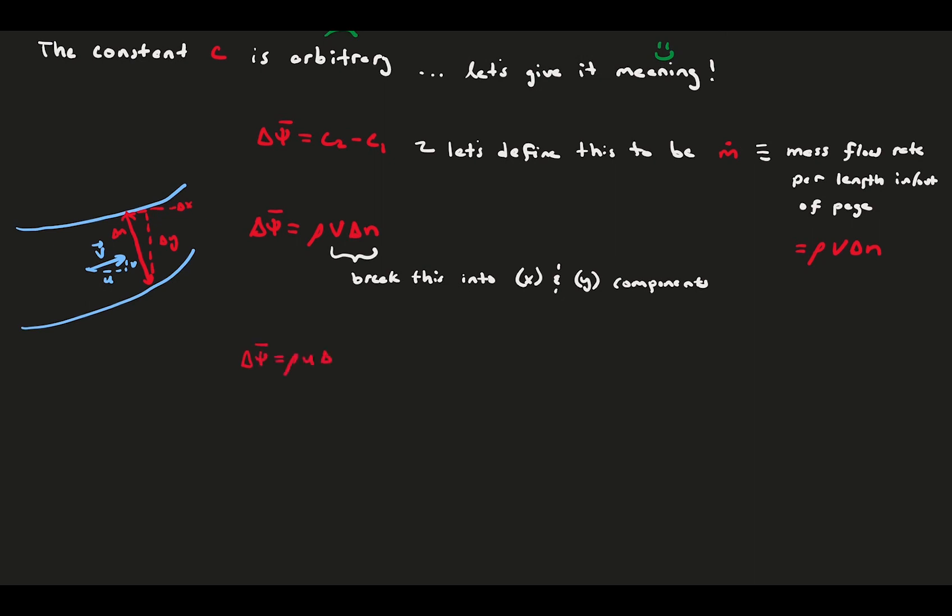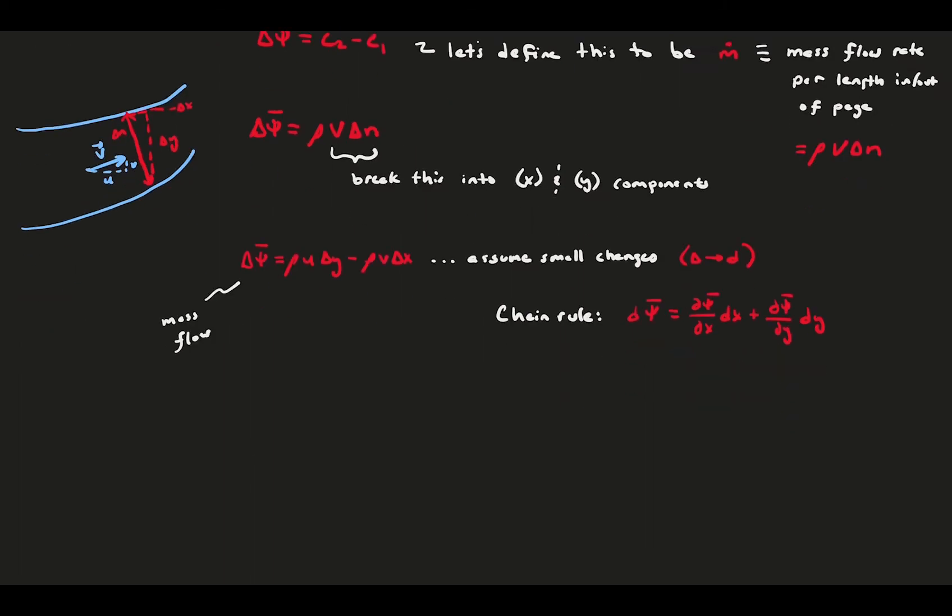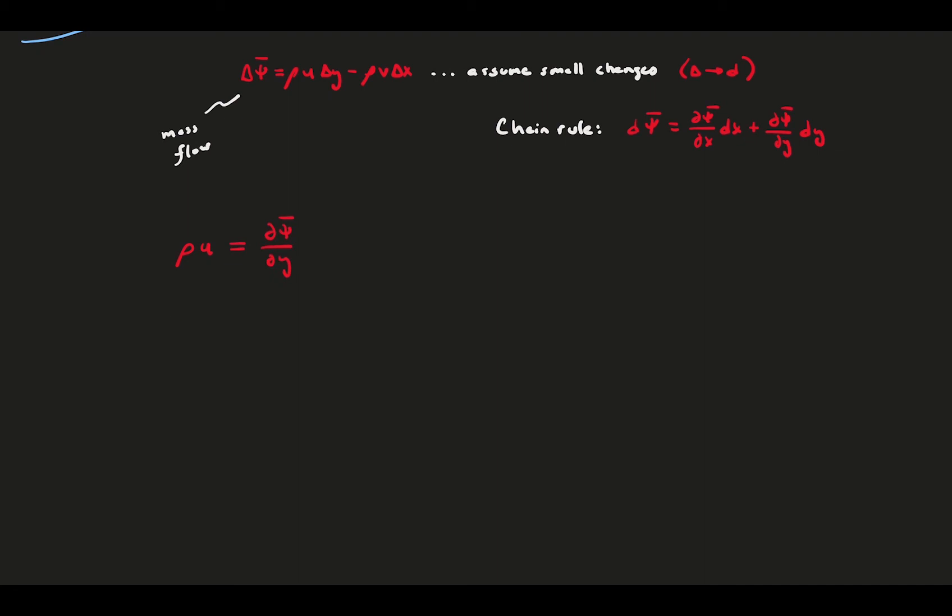For mass flow rate, we multiply the velocity by its orthogonal length, so it becomes u times delta y and v times delta x. This gives us delta psi bar, which we've now defined to be the mass flow between two streamlines, as the sum of the x and y components. If we apply the chain rule, we can notice that from this we can get two equations. Assuming small changes, the derivative of psi bar in the y direction is the density times the u velocity, and the derivative of psi bar in the x direction is the v velocity. These are the general stream function equations for Cartesian coordinates.